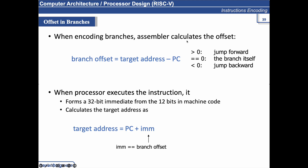When encoding branches, the assembler calculates the offset as: target address minus current instruction address. If this value is greater than zero, the branch jumps forward; if less than zero, it jumps backward. When the processor executes the instruction, it forms a 32-bit immediate from the 12-bit field. The target address is calculated as PC plus immediate.